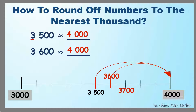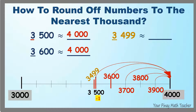Also, 3,700, 3,800, 3,900, and many more have to be rounded off to 4,000. What if we subtract 3,500 by 1? We get 3,499. Should we round it off to 3,000 or 4,000? Since 3,499 does not reach the middle, it has to be rounded off to 3,000.